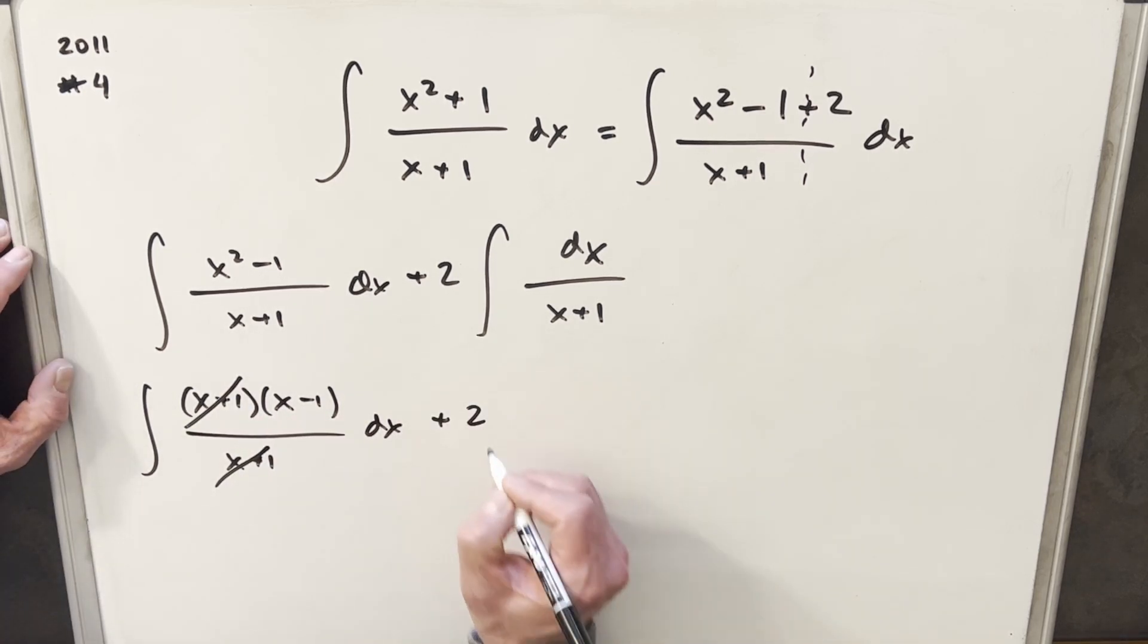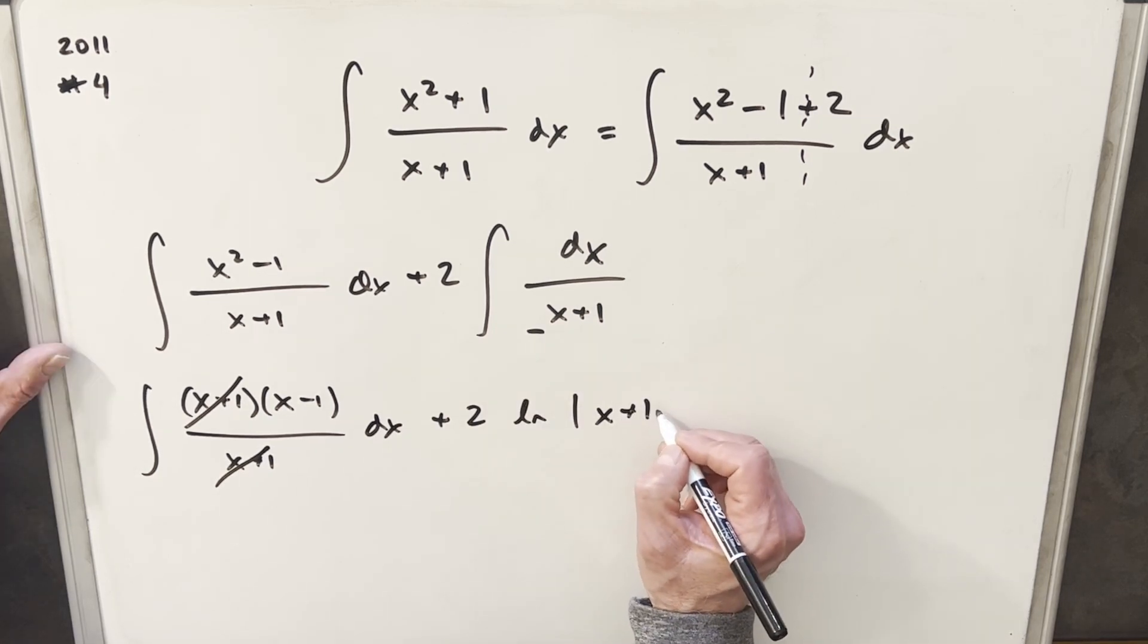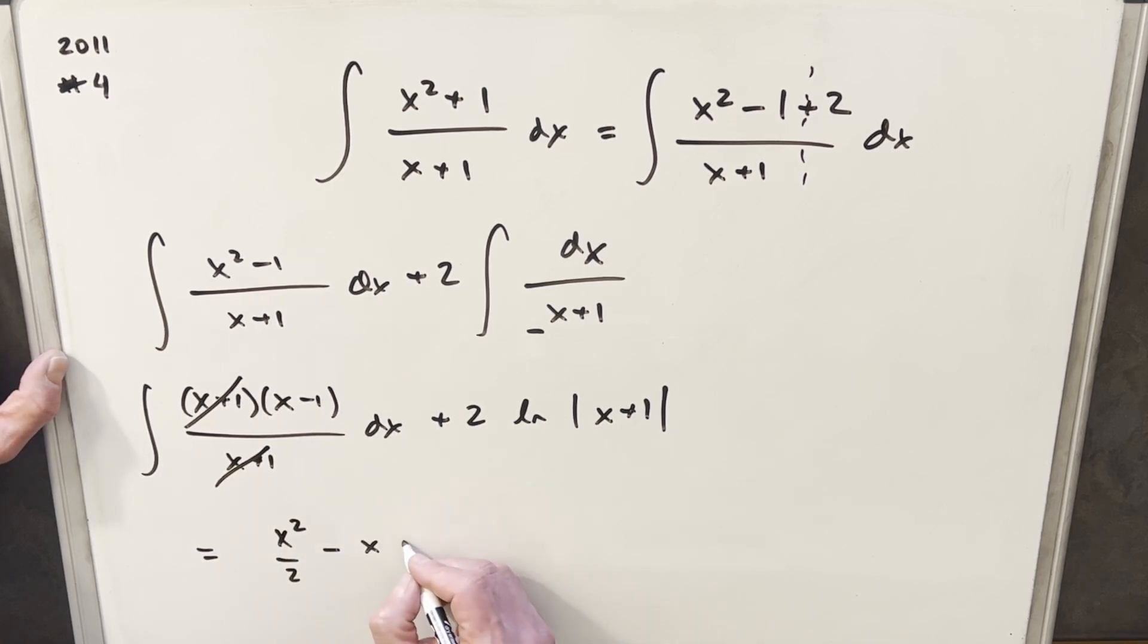We'll have our two out front. dx over x plus one, natural log, absolute value, x plus one. And then just to finish it off, all we have left here is x minus one. So this is just power rule. So integrating x, we have x squared over two. Integrating minus one, we're going to have minus x plus two natural log, absolute value, x plus one, plus c.